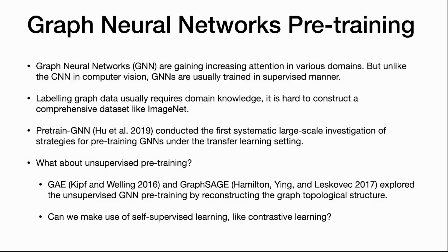First, let's talk about graph neural networks pre-training. As we all know, graph neural networks are gaining increasing attention in various domains. But unlike convolutional neural networks in computer vision, graph neural networks are usually trained supervisedly. One of the reasons is that labeling graph data usually requires domain knowledge, for example, biology or chemistry, making it hard to construct a comprehensive dataset like ImageNet.